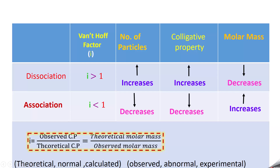The Van't Hoff factor I = observed colligative property / theoretical colligative property. Since colligative property and molar mass are inversely related, I can also be written as: I = theoretical molar mass / observed molar mass. Here, theoretical, normal, and calculated all refer to the value calculated from the formula, while observed and abnormal refer to the experimentally observed value.